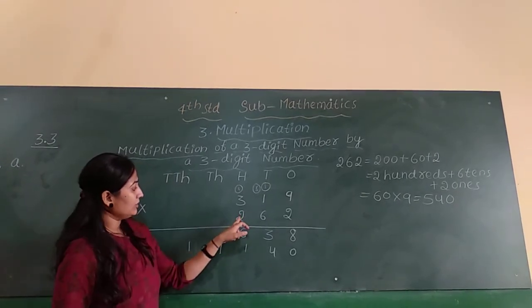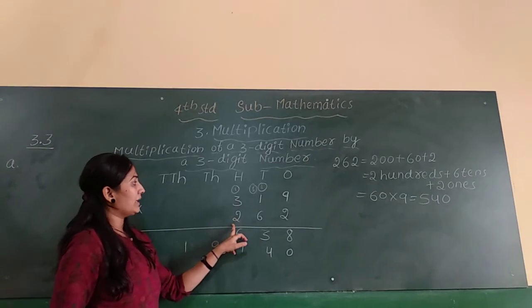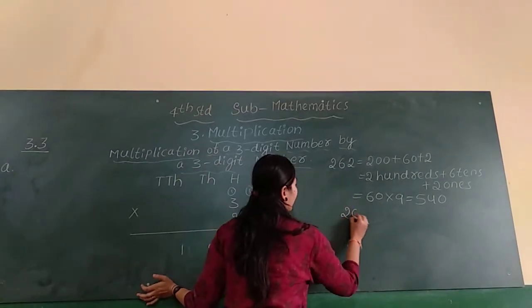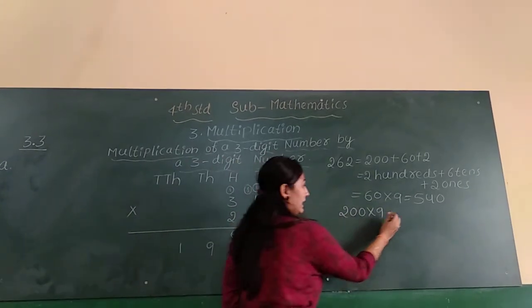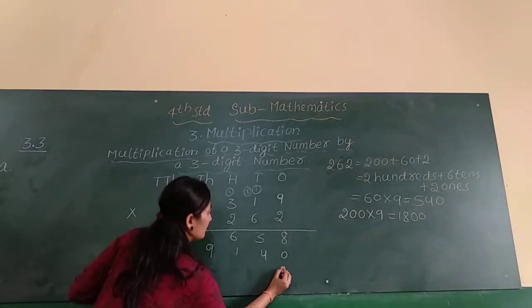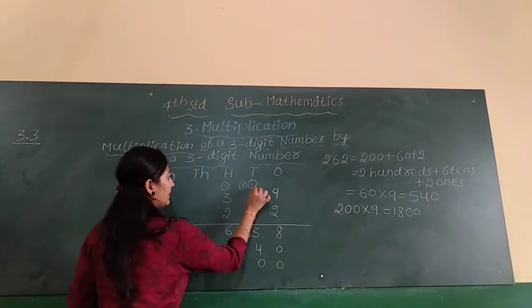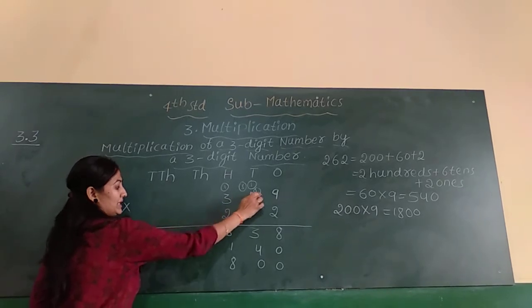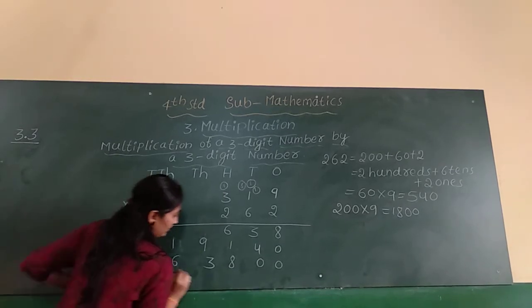Next move towards the hundreds place. 2 is in the 200 place, so multiply by 200. 200 into 9, 2 nines are 18 and 2 zeros, so 0, 0 and 8 here, and 1 carry over. Next 2 ones are 2, 2 plus 1 is 3. Next 2 threes are 6.